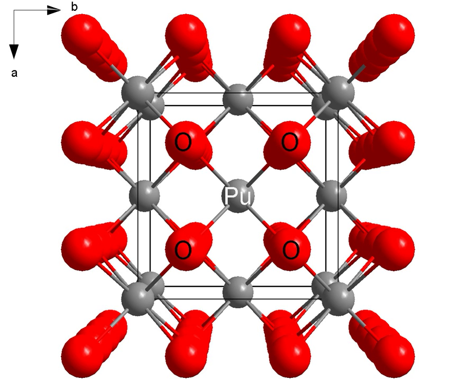In nuclear fission, one atom of plutonium splits into two. The vacancy of the octahedral holes provides room for the new product and allows the PuO2 monolith to retain its structural integrity.